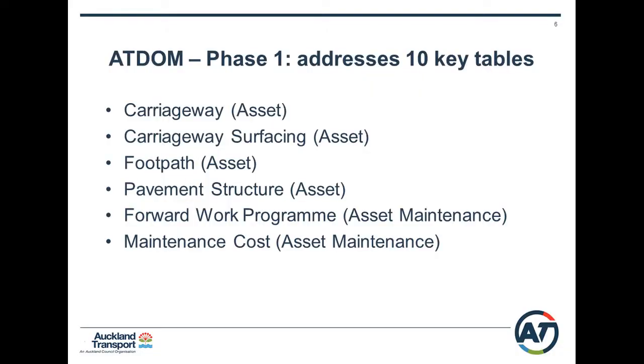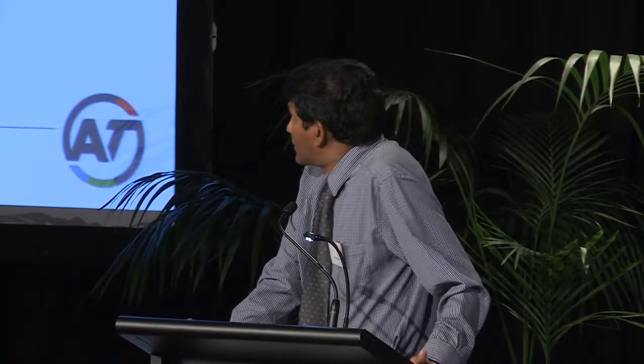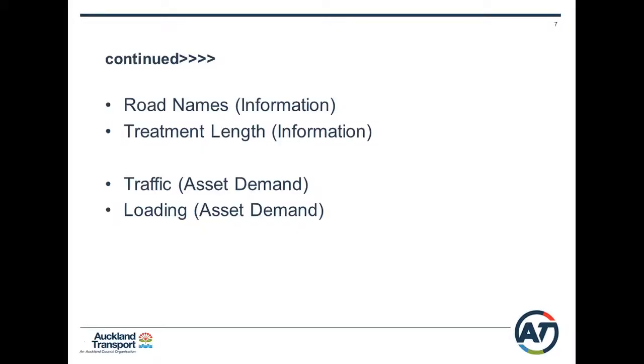The manual provides procedures and policies for data collection, data entry, and data management. It also specifies fields and tables to be populated. For Phase 1 of this Auckland Transport Database Operation Manual, we have addressed 10 key tables, starting from carriageway and carriageway surfacing up to traffic and loading.